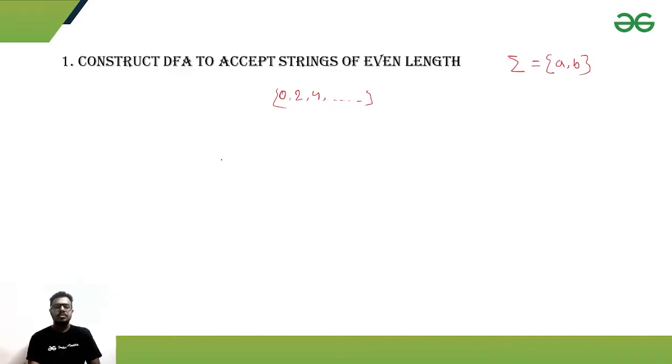Accepting zero length means the initial state should be the final state. After that, if we are getting any odd number of symbols, it should go to some of the non-accepting states. If we are getting another symbol, then that makes it even.